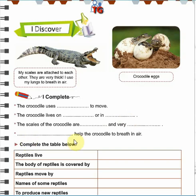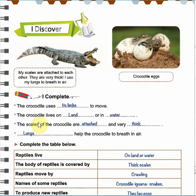The scales of the crocodile are what? They are thick, or they are attached and very thick. So we can say that the crocodile uses its limbs to move. It lives on land or in water. The scales of the crocodile are attached and very thick. The lungs help the crocodile to breathe in air.